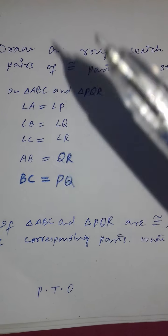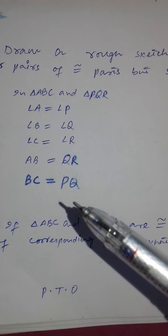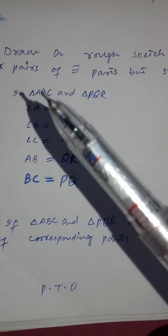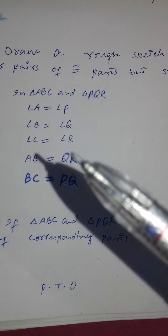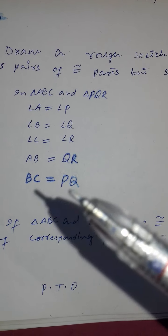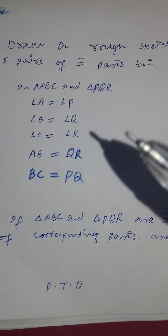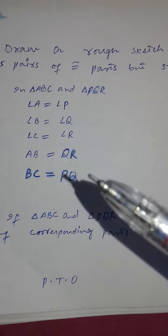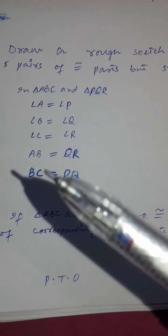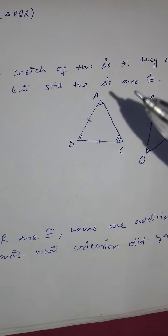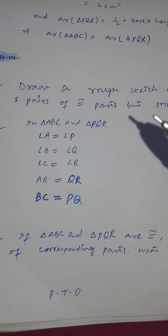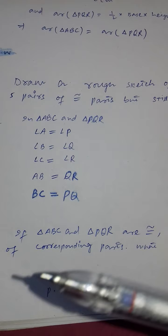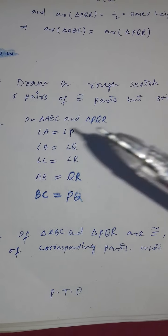Instead, I take AB = QR and BC = PQ — these are non-corresponding sides. By choosing non-corresponding sides, the triangles are not congruent even though five pairs of parts are equal: three angle pairs plus two side pairs. If corresponding sides were taken, the triangles would be congruent, but the question requires them to not be congruent. These five steps are the key.